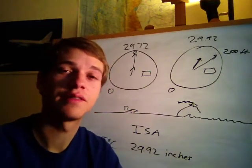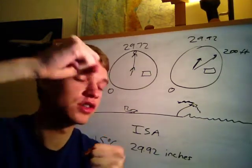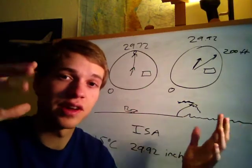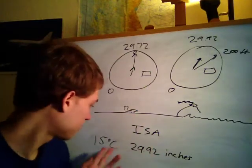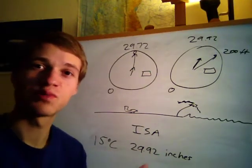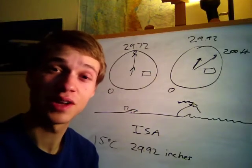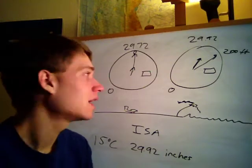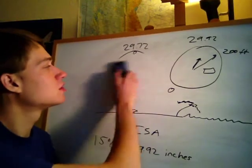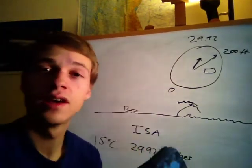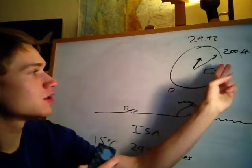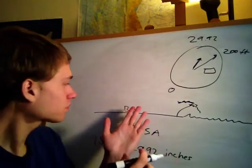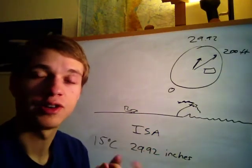Another factor that causes air density to decrease is temperature. On a hot day, air molecules spread apart because they're moving around more, so the air is less dense. We're at the beach and it's more like 35 degrees Celsius rather than 15, so the air is going to be much less dense than it could be. The airplane will actually feel as if it's at a much higher altitude — and we call this density altitude. Density altitude is pressure altitude corrected for non-standard temperature.